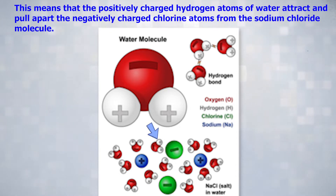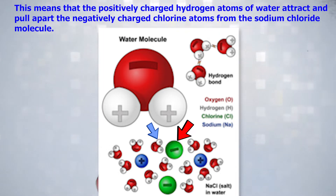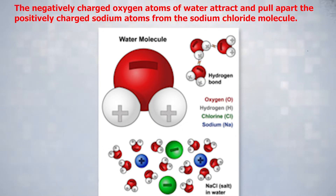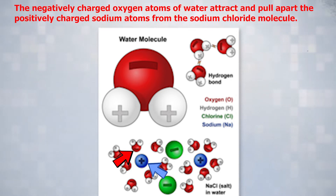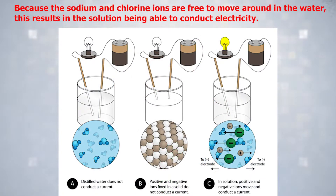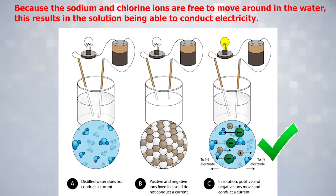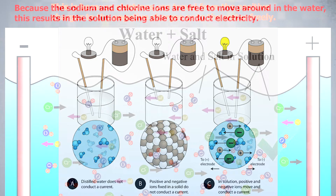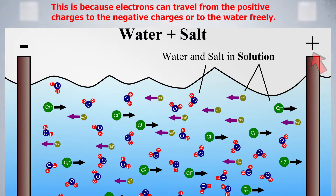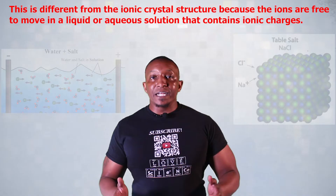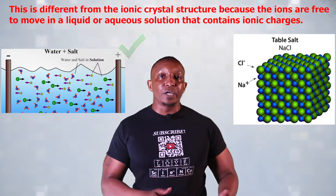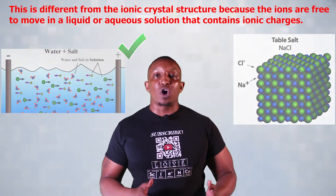The positively charged hydrogen atoms of water attract and pull apart the negatively charged chlorine atoms from the sodium chloride molecule. The negatively charged oxygen atoms of the water attract and pull apart the positively charged sodium atoms from the sodium chloride molecule. Because the sodium and chlorine ions are free to move around in the water, this results in the solution being able to conduct electricity. This is because electrons can travel from the positive charges to the negative charges very freely, unlike in the ionic crystal structure where ions are not free to move.